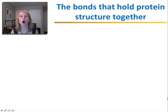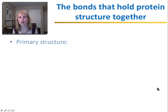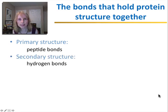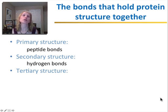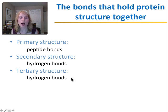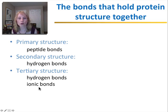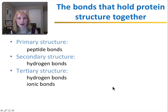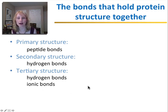What holds all these different protein structures together? The primary structure is held together with the peptide bond, a type of covalent bond that links the amino acids together. The secondary structure — the alpha helices and beta pleated sheets — are held together through hydrogen bonding. The tertiary structure is held together through many interactions, including hydrogen bonds between the different variable groups of amino acids, and ionic bonds when certain amino acids have acidic or basic side chains that interact through acid-base interactions.